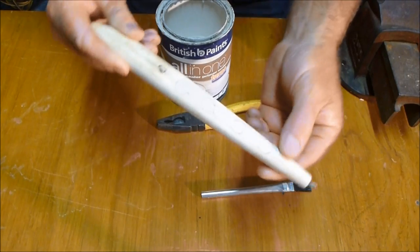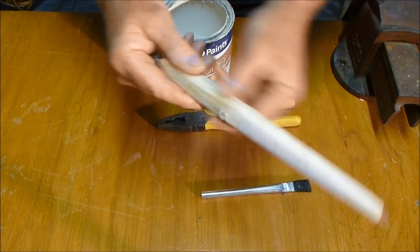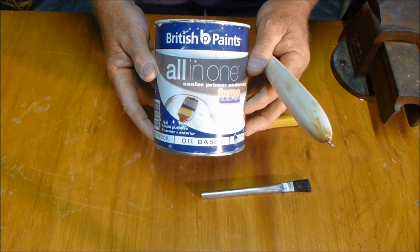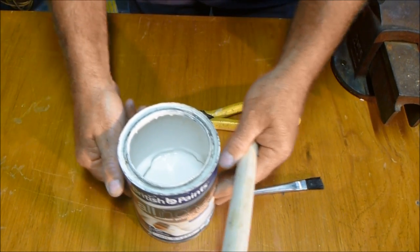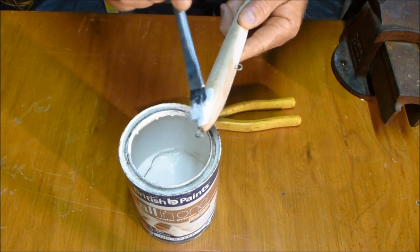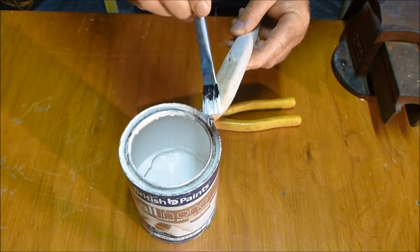As you can see, I've sanded down the putty nicely, now it's time to give it a coat of undercoat. So I'm just using a Suler Primer, oil-based, and a matter of painting some on, like so.